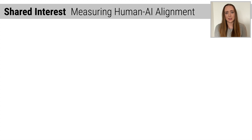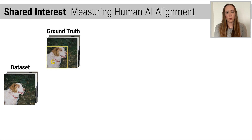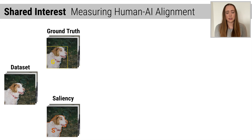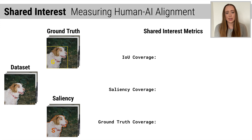This was the problem that led us to develop Shared Interest, a method to explore model behavior at scale. We start with a dataset to analyze our model's behavior on. We quantify human decision-making via ground-truth annotations, and we explain model decision-making via saliency. Here we use LIME applied to ImageNet images and their object-level bounding boxes. However, Shared Interest is agnostic to data modality and saliency method. For each image, we quantify the relationship between the saliency and the ground-truth via three coverage metrics: IOU coverage, saliency coverage, and ground-truth coverage.